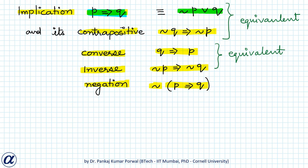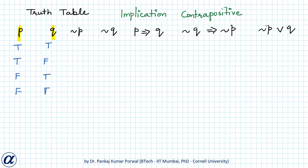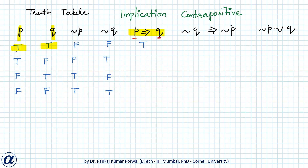First, I will show that p implies q, not p or q, and the contrapositive have the same truth table. We have columns for p and q with their truth values. Not p will be false when p is true, and for other rows: false, true, true. Similarly, not q will be false, true, false, true. Now the truth value of p implies q: when p is true and q is true, the implication is true.